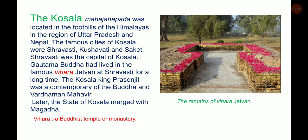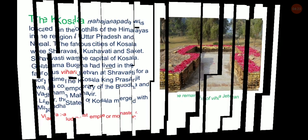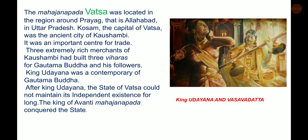Vihara means a Buddhist temple or monastery. The Mahajanapada Vatsa was located in the region around Prayag, that is Allahabad in Uttar Pradesh. Kaushambi was the capital of Vatsa and was an ancient and important centre for trade. Three extremely rich merchants of Kaushambi had built three Viharas for Gautama Buddha and his followers. King Udayana was a contemporary of Gautama Buddha. After King Udayana, the state of Vatsa could not maintain its independent existence for long, as the king of Avanti conquered the state.